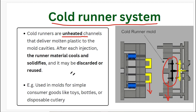There is material waste from the runner for each cycle. The wasted runner material can be reused or discarded. Cold runner systems are generally used for simple molds, small parts, and where low production volume is required — in those cases the cold runner is feasible.